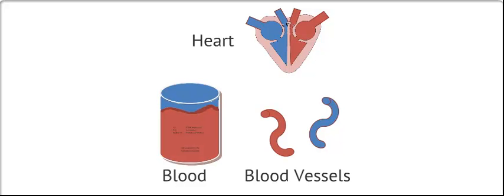There are three main components to circulatory systems. The central pump, which is the heart. The vascular system, the blood vessels. And the circulating fluid, which is the blood.